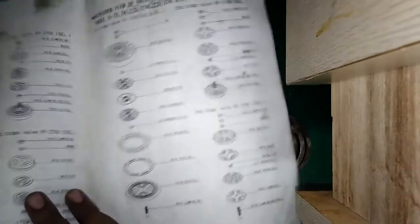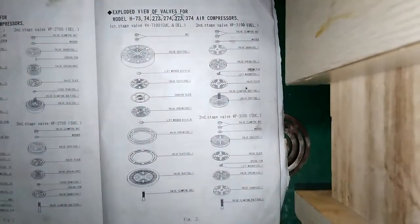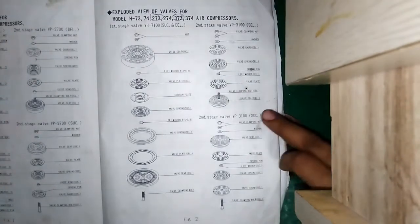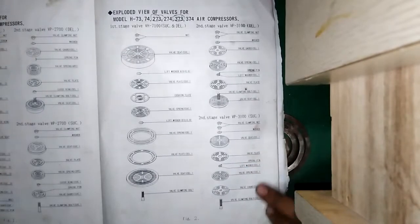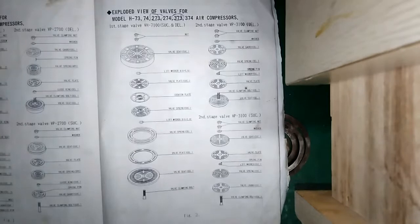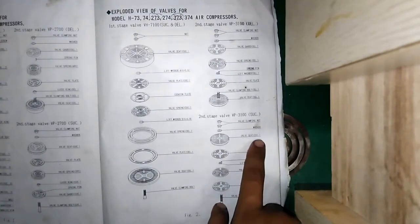The torque by which you have to tighten it is 24.52 Newton meters for the VP-3100S, or 250 kilogram-force centimeter. This page is most important. In this page it is the exploded view of the valve for the model H-273.